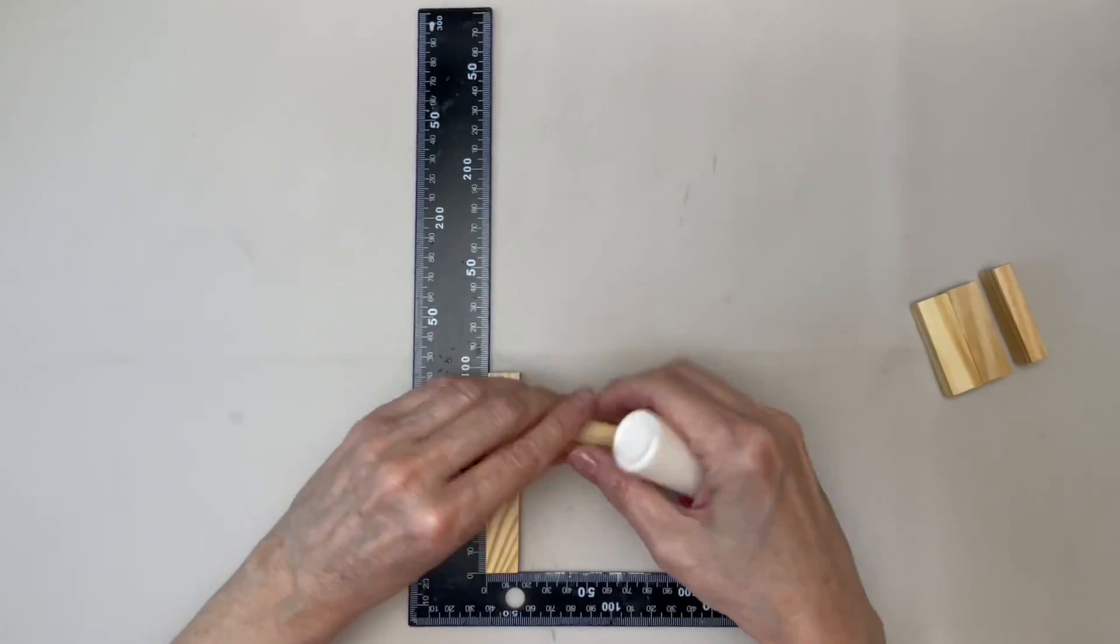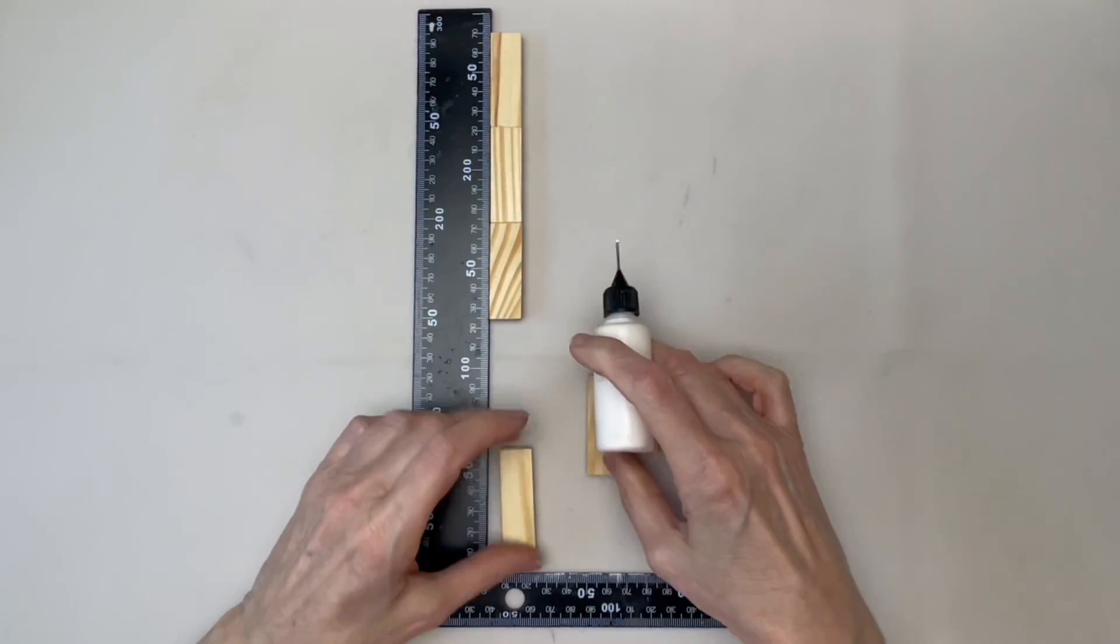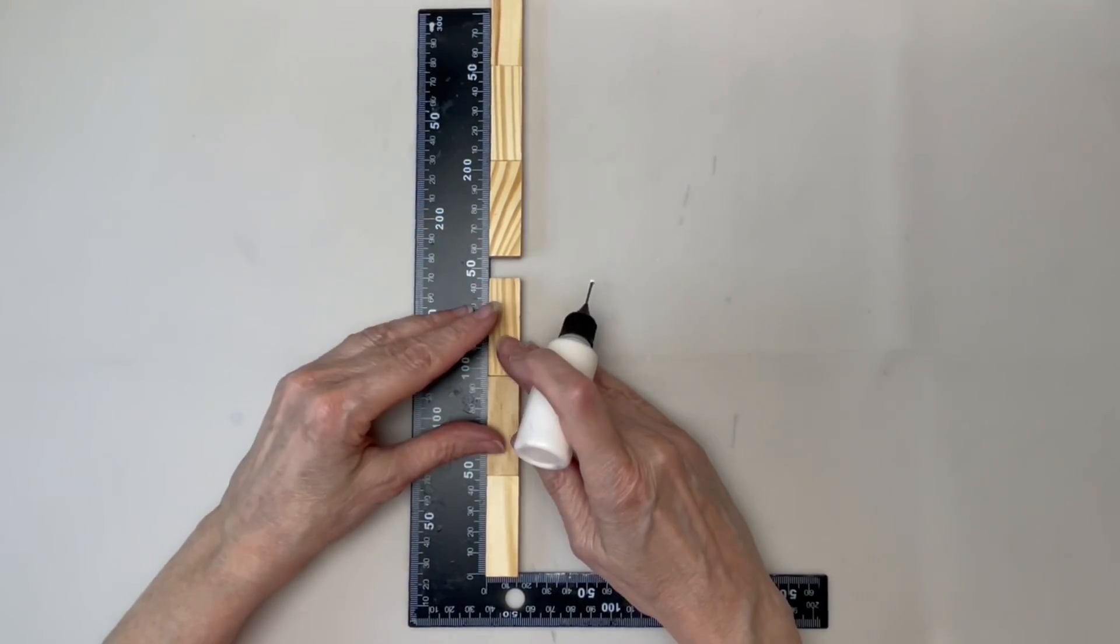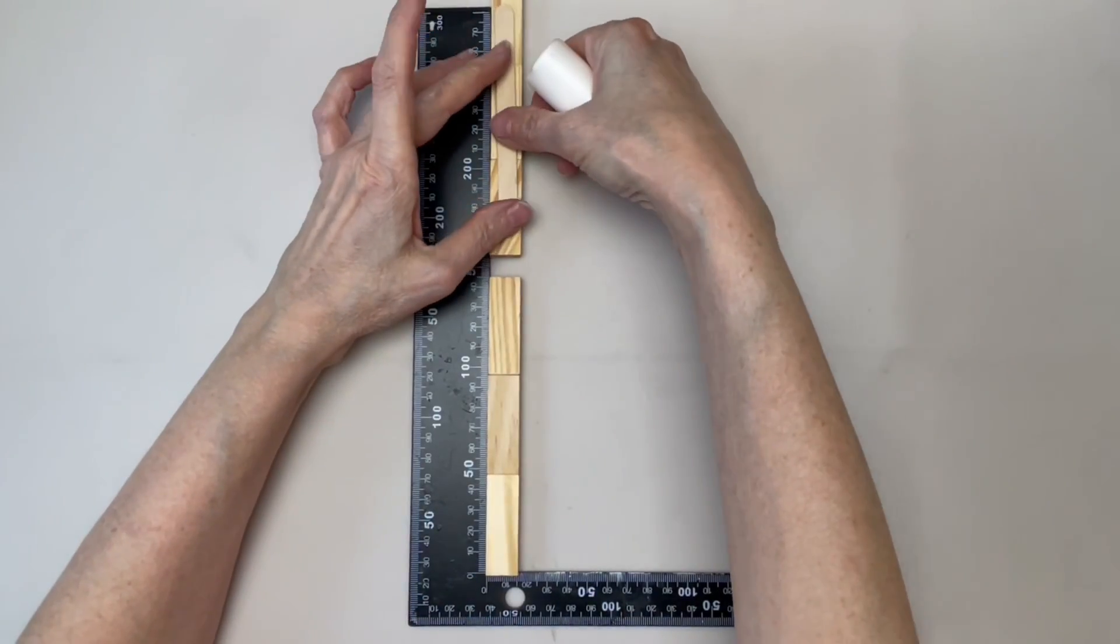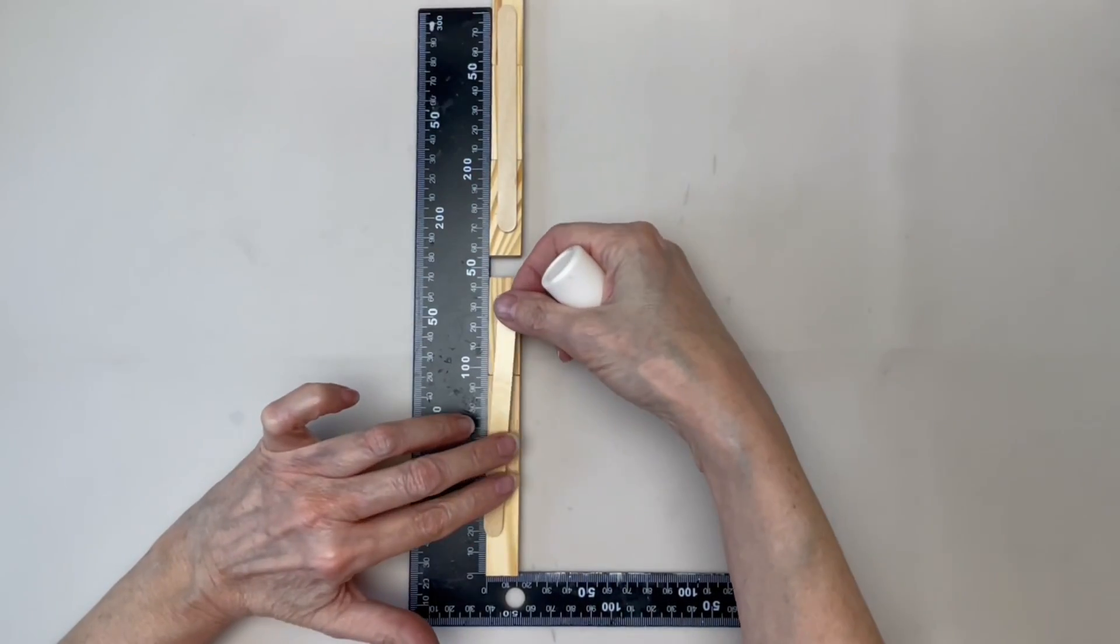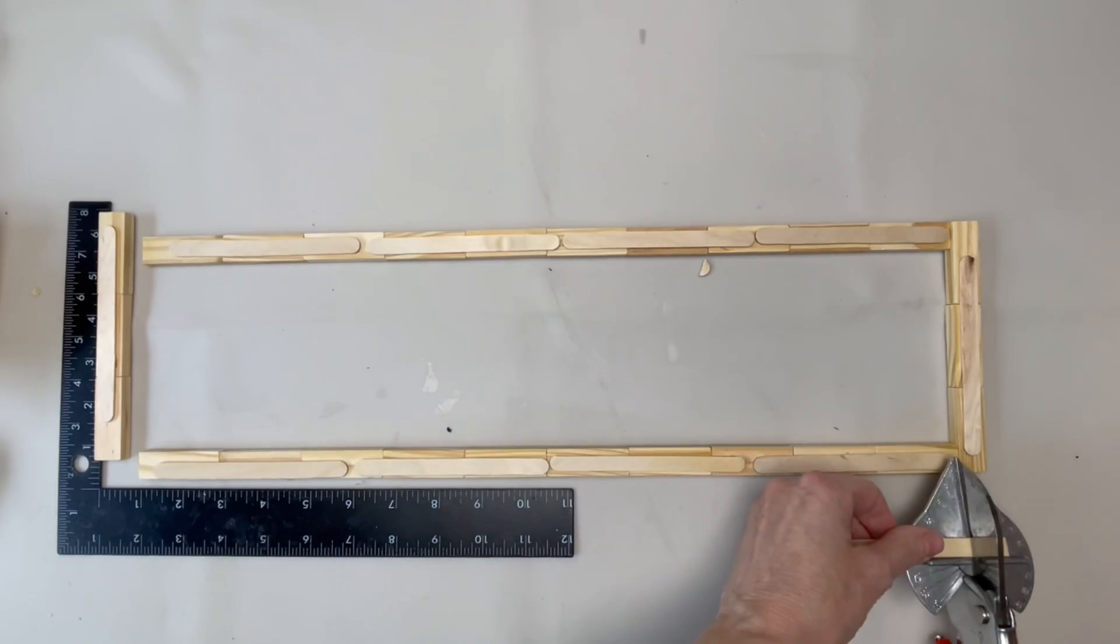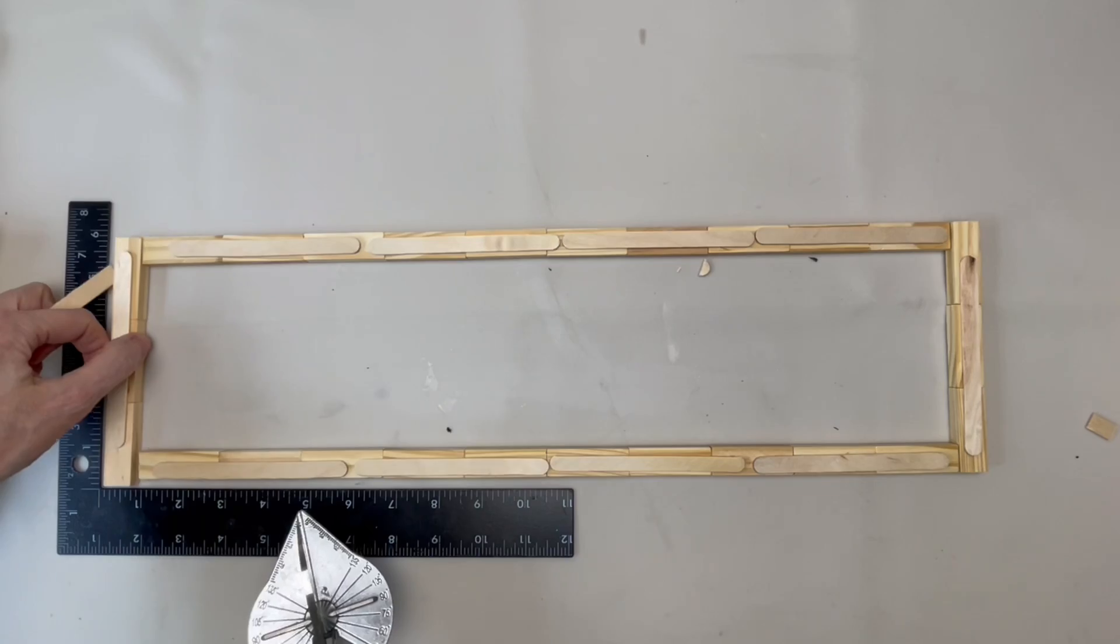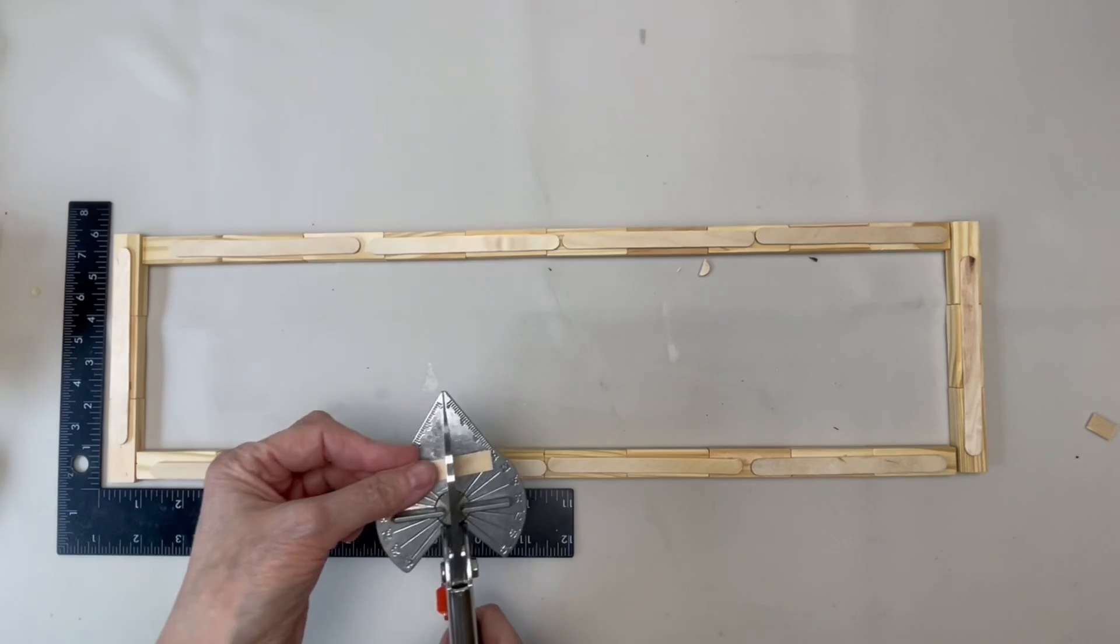Place some weight on top of the popsicle sticks to make sure that they glue nicely to the blocks. Next, make the short sides three blocks long. You'll be gluing the short sides on top of the long sides. And here you can see me cutting pieces of popsicle sticks because I want to support those joints where the short sides and long sides are joined.